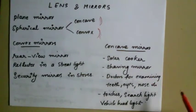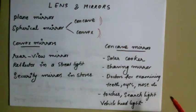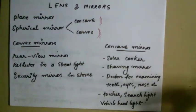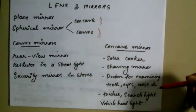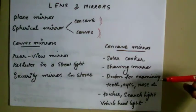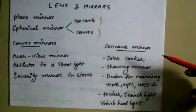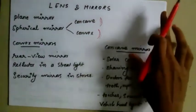Concave mirrors are used in solar cookers, as shaving mirrors, by doctors for examining teeth, eyes, and nose, and in torches, search lights, and vehicle headlights. The concave mirror converges light, making it useful for these focused-light applications.